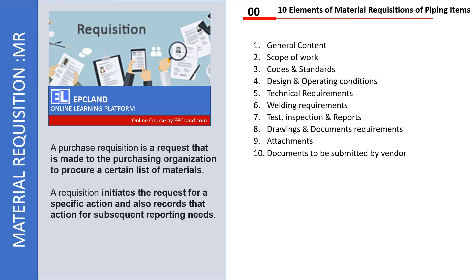Purchase requisition, or material requisition — sometimes we call it MR. In the piping department, we have to develop a lot of MRs with respect to various elements used in piping systems. A purchase requisition is simply a request which a piping engineer raises to the purchasing department so that they can start interacting with various vendors and share the requirements with them.